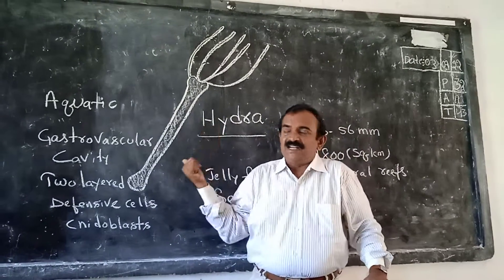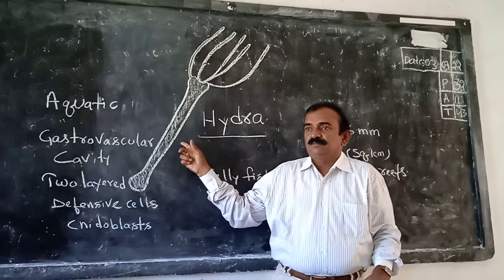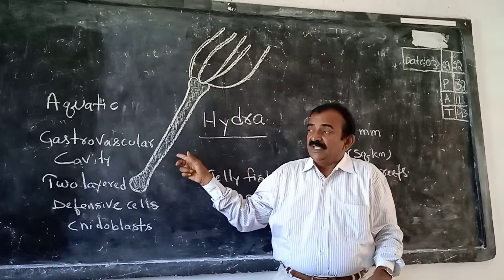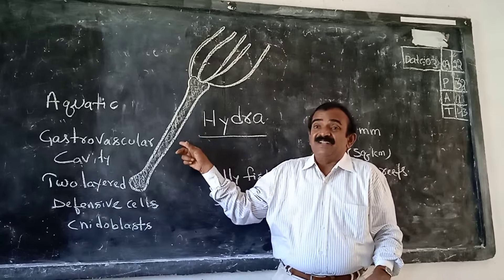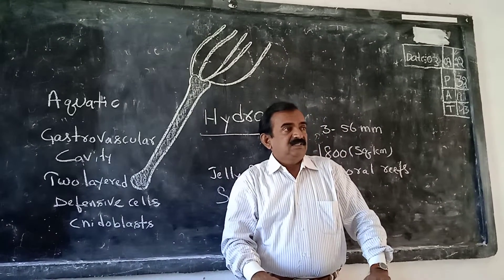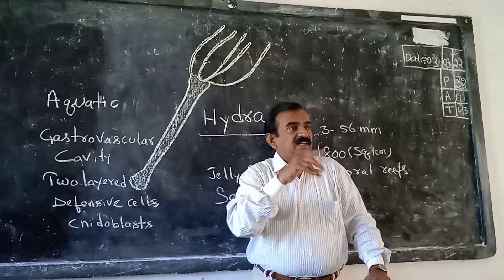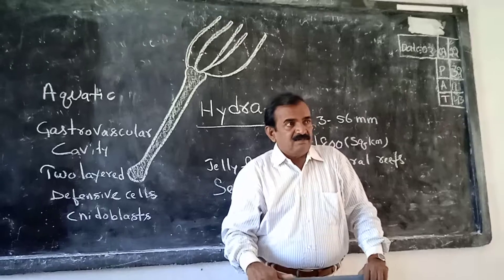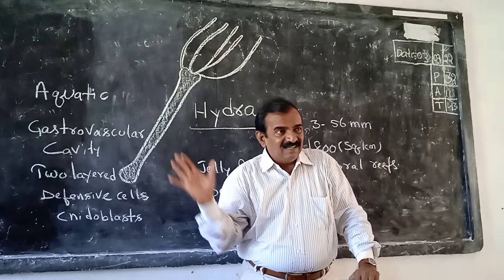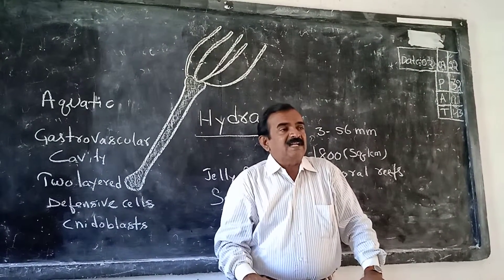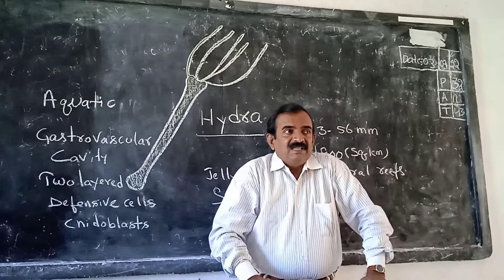Cnidarians or Coelenterata — the example is Hydra. This is Hydra. And these animals are aquatic animals. They live in water. They live in marine water. These are aquatic animals.